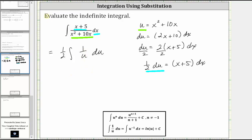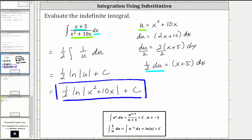Now let's integrate with respect to u. The antiderivative is one half times natural log absolute value of u plus c, which means the antiderivative in terms of x is equal to one half times natural log absolute value of x squared plus 10x plus c. I hope you found this helpful. Thank you.